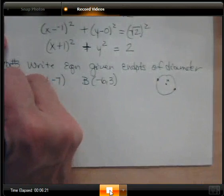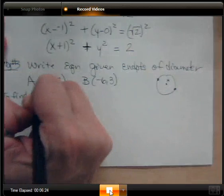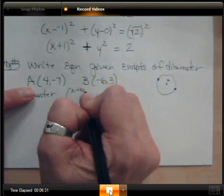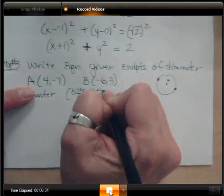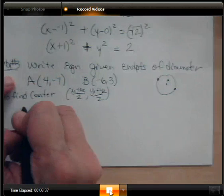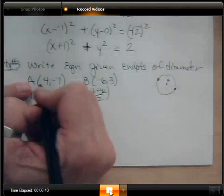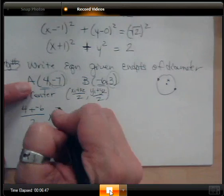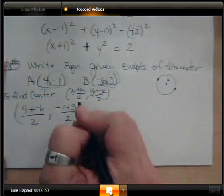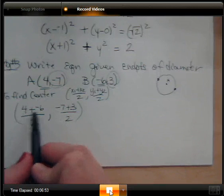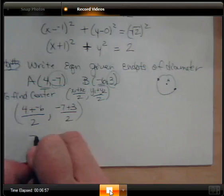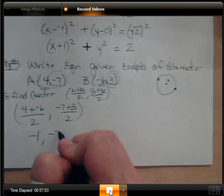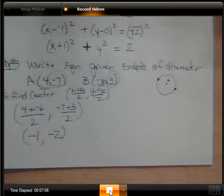To find the center, we average the x-coordinates and y-coordinates: x1 plus x2 over 2 comma y1 plus y2 over 2. That gives us 4 plus negative 6 over 2, comma negative 7 plus 3 over 2. So the center is negative 2 over 2 comma negative 4 over 2, which is negative 1 comma negative 2.